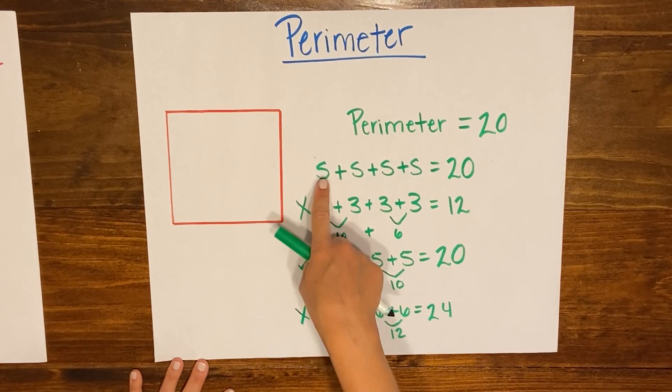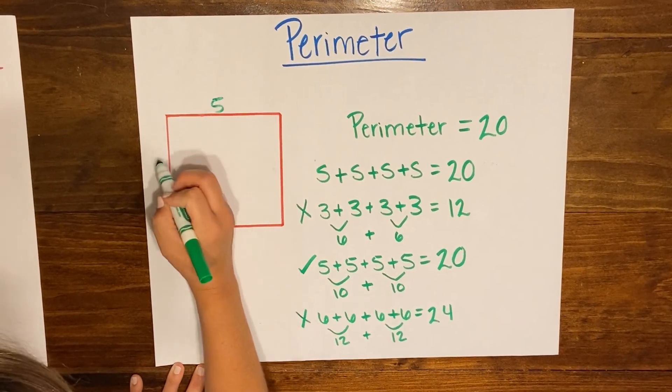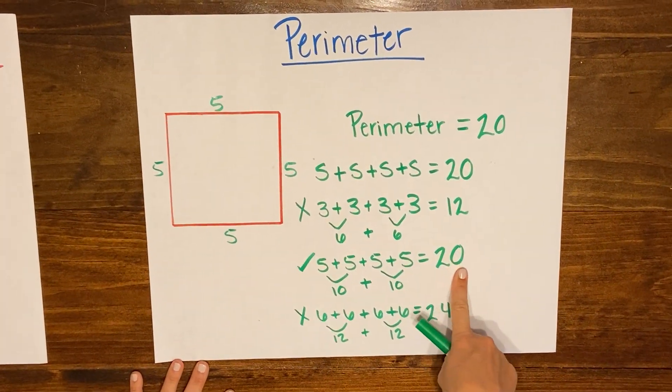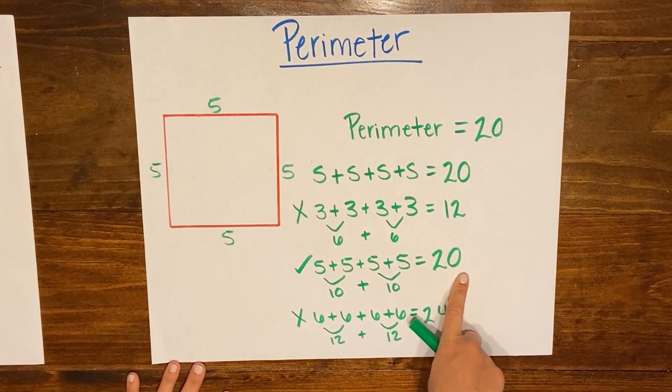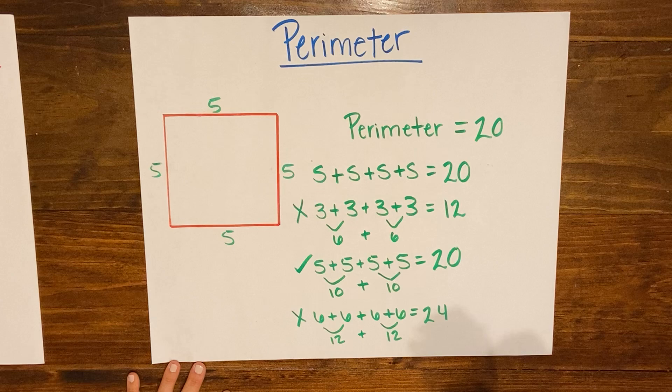So remember that the S stood for each side so I now know that the length of each side is 5 because I found that out right here.